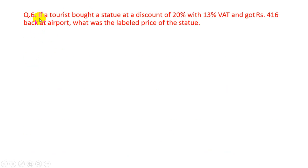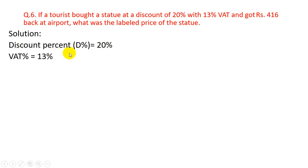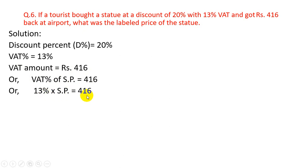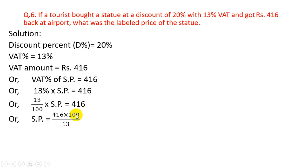Question number 6. A tourist bought a statue at a discount of 20% with 13% VAT and got Rs.416 back at the airport. What was the labeled price of the statue? The Rs.416 refunded at airport is the VAT amount. Discount% = 20%, VAT% = 13%, VAT amount = 416. VAT amount = VAT% of SP, so 13% × SP = 416, giving SP = 416 × 100/13 = Rs.3200.